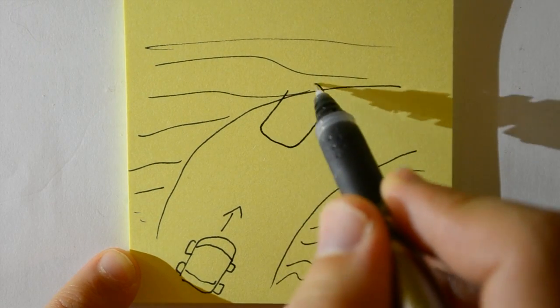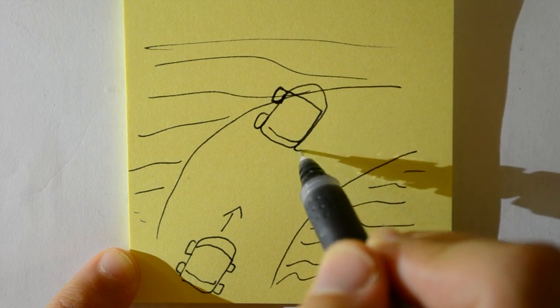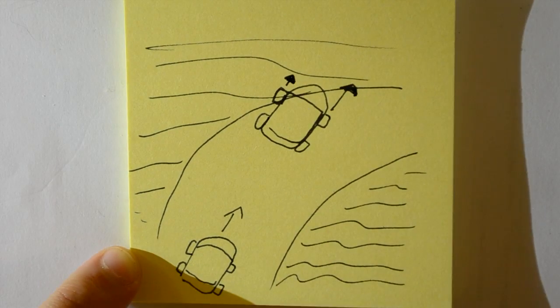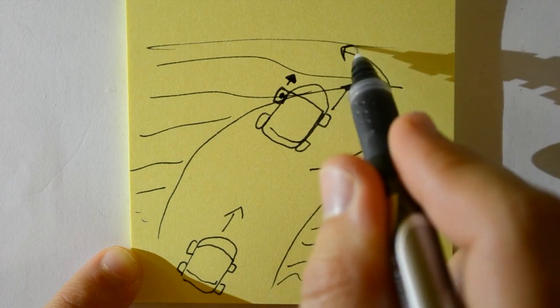But when one wheel hits the dirt, the friction causes that wheel to go slower than the wheel on the other side. So this wheel acts as a pivot and the car spins around.